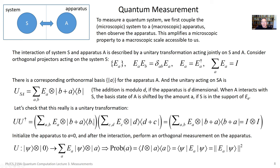We have an inner product of basis state b for the apparatus with a basis state d, so that will require b to equal d. Acting on the system, we have a product of two projectors E sub a and E sub c, which requires a to equal c. So the sum collapses to just a sum over a and b, where for the product of E_a, E_c I can write E_a. For the ket b plus a, that becomes the projection on the basis state b plus a. For each value of a, when I sum over all b, I'm summing over projectors onto all the basis states — that's the identity on the apparatus. The sum over a of the E_a's is the identity on the system by completeness. So U U adjoint equals the identity — this is a unitary operator.